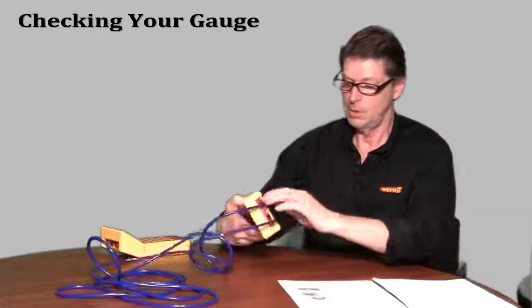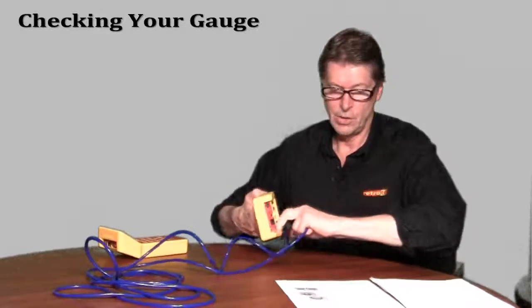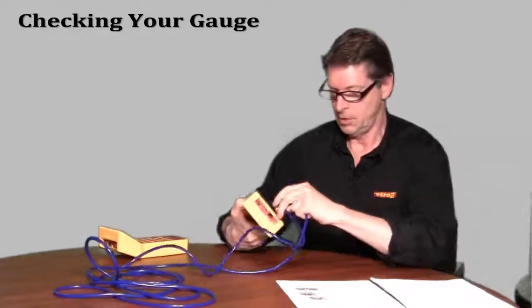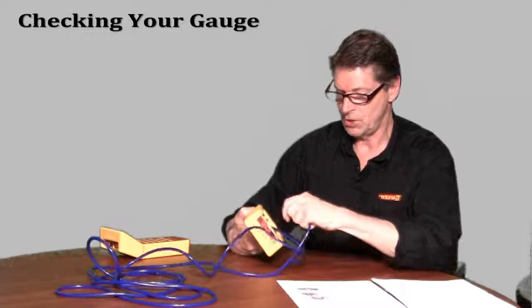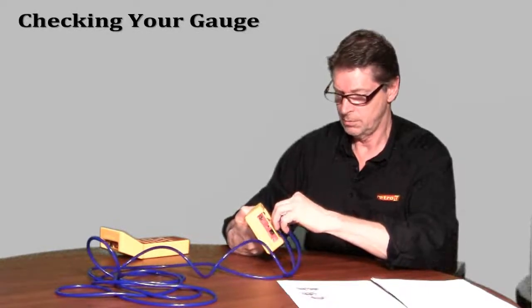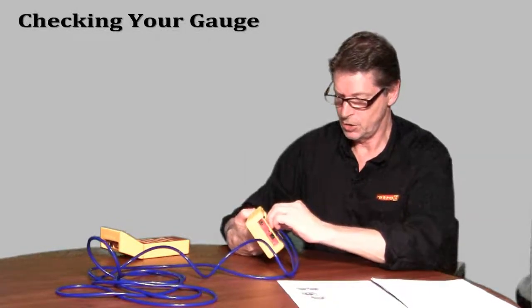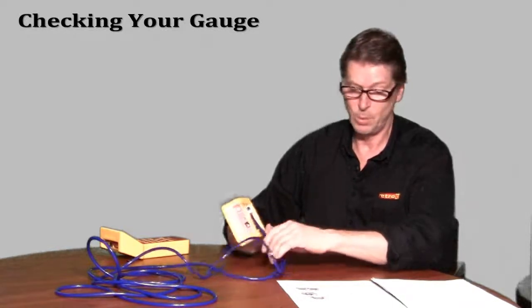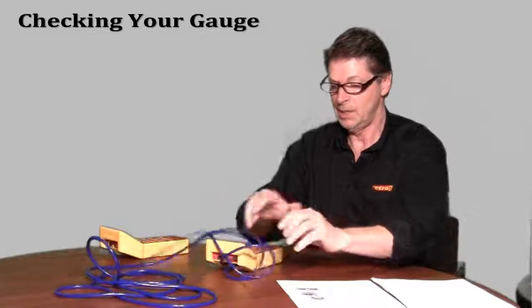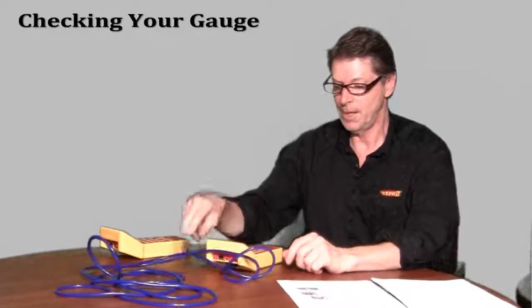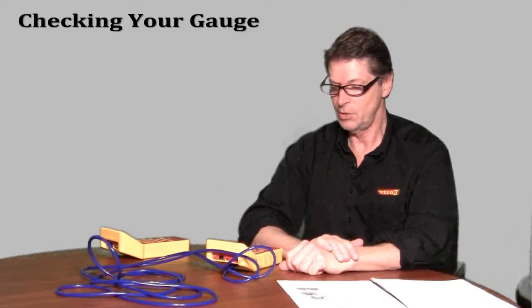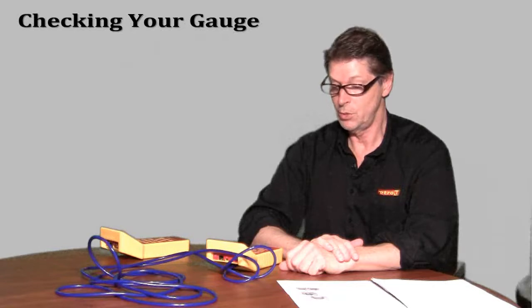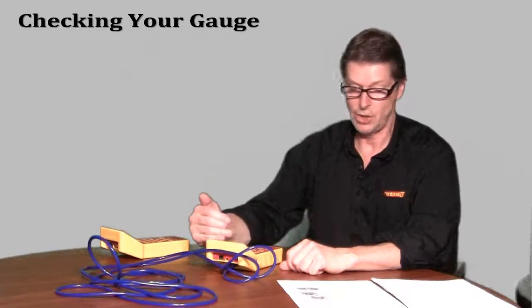Step two is to check the negative side of the channels against each other by pushing the tube over the reference A and reference B ports, and again observing for about five seconds or so the difference between the two readings on channel A and channel B.